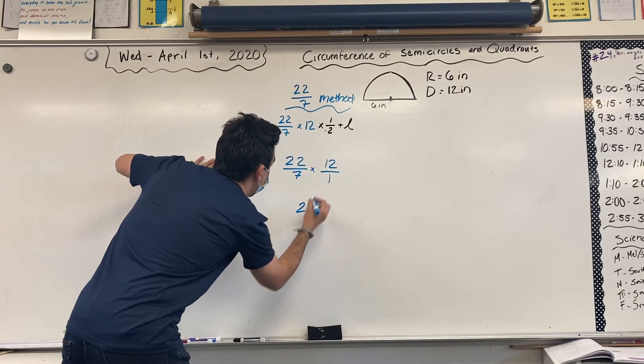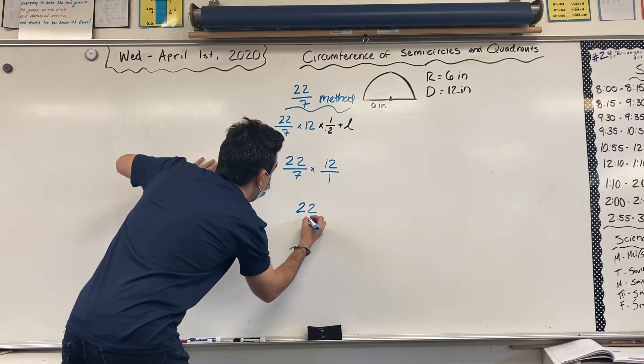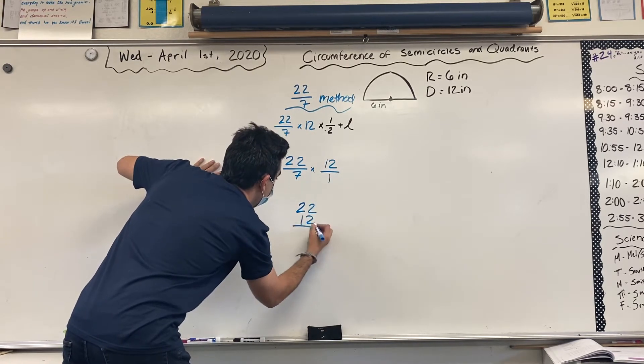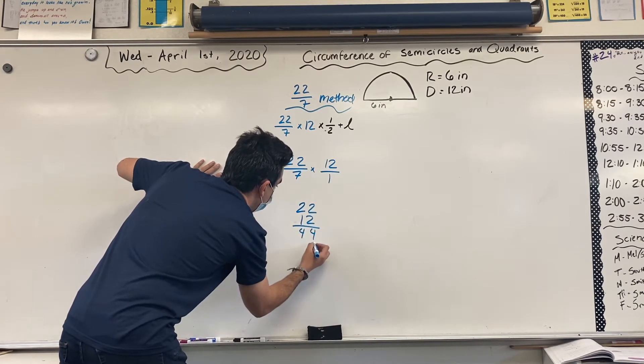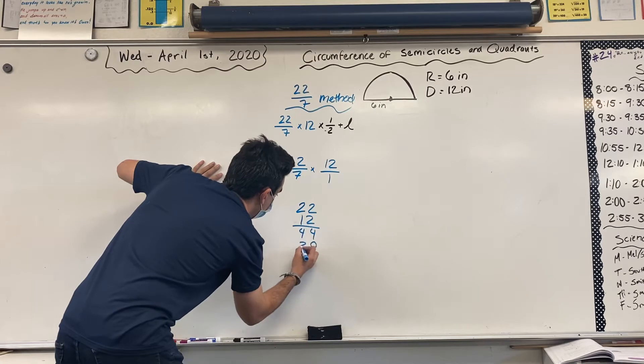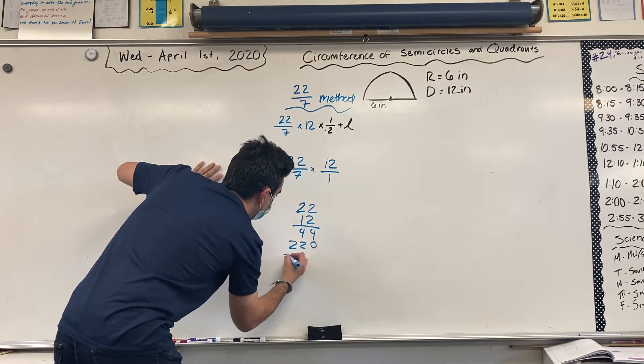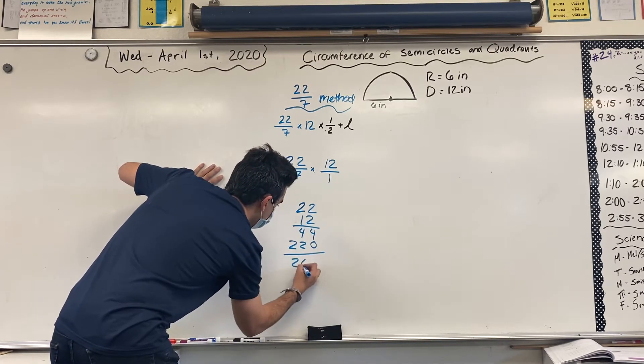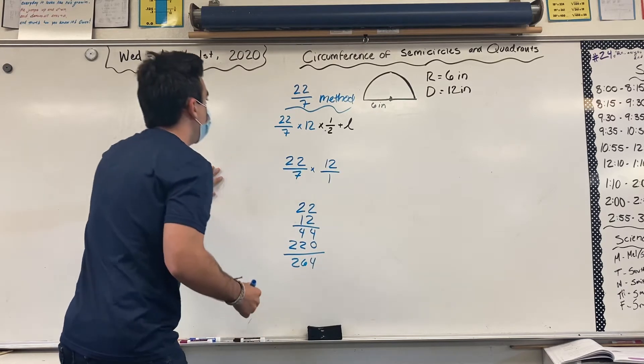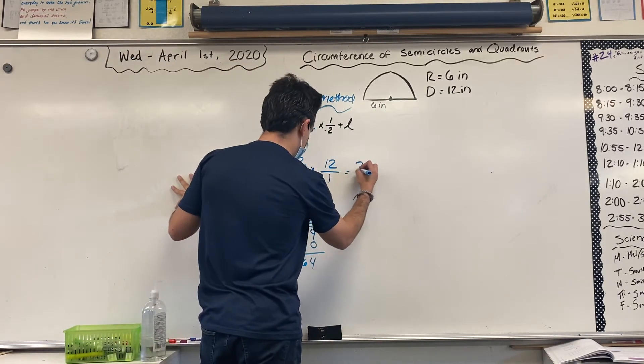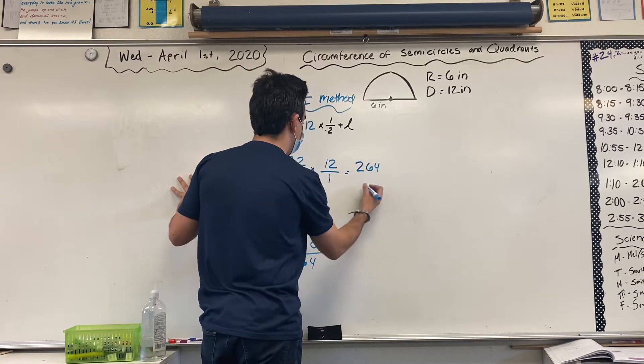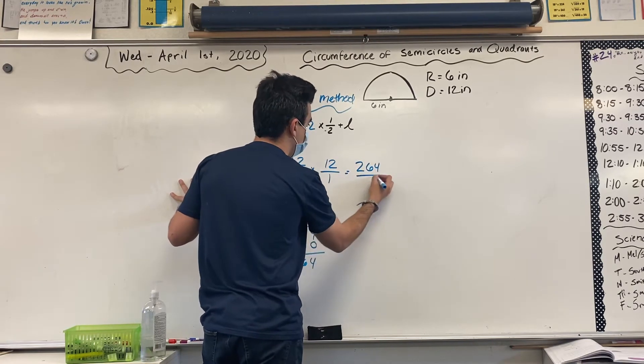So, let's go ahead and do that. 22 times 12 is 2 times 2 is 4. 2 times 2 is 4. Placeholder. 1 times 2 times 2 is 2. 1 times 2 is 2. And I get 264. With that said, I go ahead and put that at the top. 264. 7 times 1 is 7.